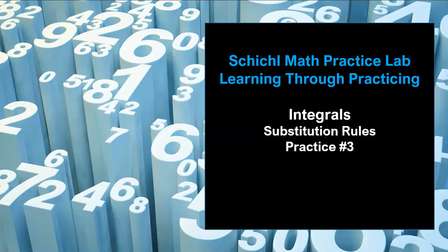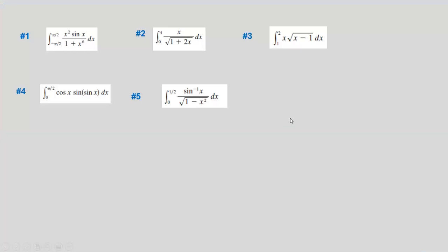For the previous two videos, we went through from very basic and gradually got a little harder. For this practice set, we are going to be focused on definite integration — that means we have the upper bound and the lower bound. We're going to look at five problems to see how we approach this.